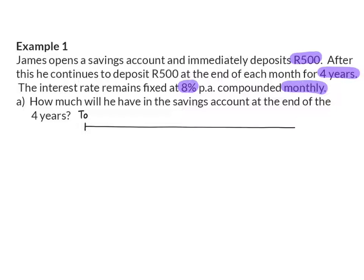Firstly, James opens the savings account and immediately deposits R500 into the account. It is important to read the word immediately here. After this, he continues to deposit R500 at the end of each month for 4 years, which means that at the end of the first month, he deposits another R500 into the account. He continues for 4 years worth of months, and that means 4 times 12, and that will give us 48 months.